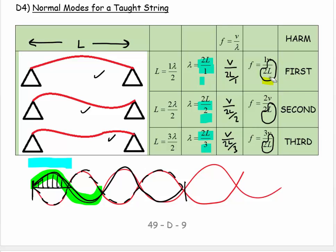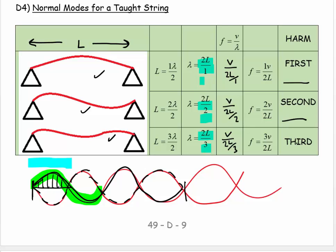So it's v over 2L times a constant for these first three standing waves. And because the frequencies are in the ratio of 1 to 2 to 3, we call it the first harmonic for the first one, the second harmonic for the second one, and the third harmonic for the third one.